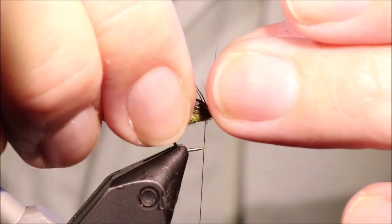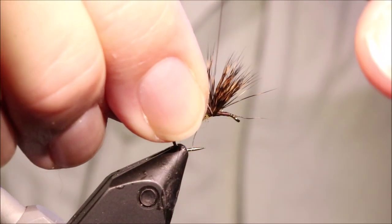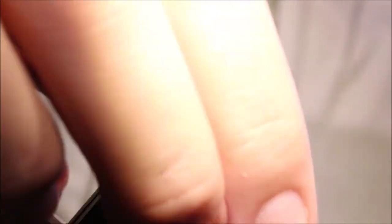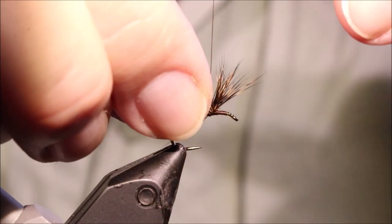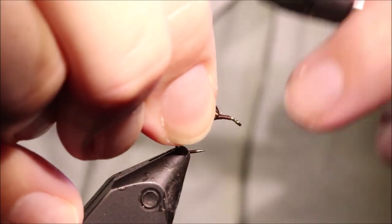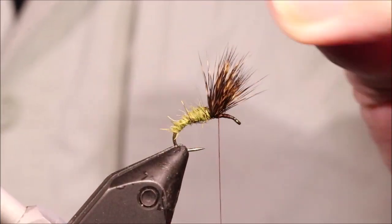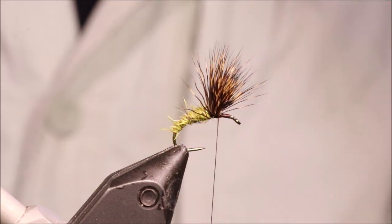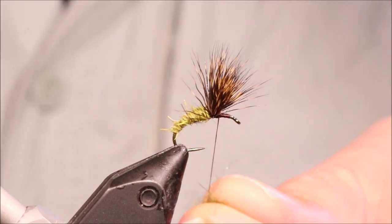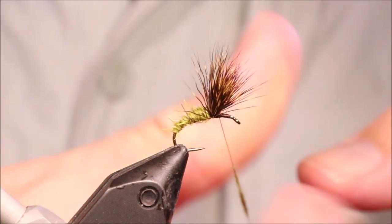And now just to add a bit of durability to the wing, I'm going to come in and cross through it with a thread. You'll be amazed at the difference that makes to how long these flies last. It stops the wing collapsing.